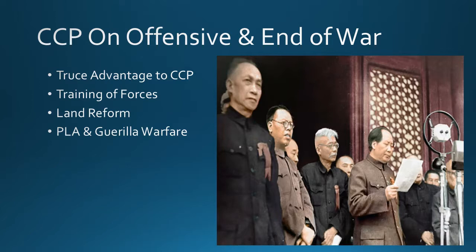By July 1947, the communists were much more prepared. They were no longer called the Red Army — they became the PLA, the People's Liberation Army. They returned to guerrilla warfare, conducting a sabotage campaign to disrupt the nationalists' war efforts. Combined with the nationalist loss of support, this allowed the communists to gain control of Manchuria and inflict a significant loss of troops on the nationalists.